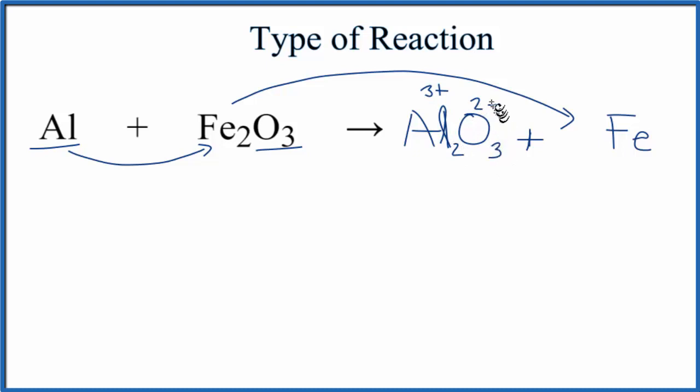So now the three times minus two, that's minus six. This three times two here, plus six. So those charges cancel out. So this is the right formula for this aluminum oxide.